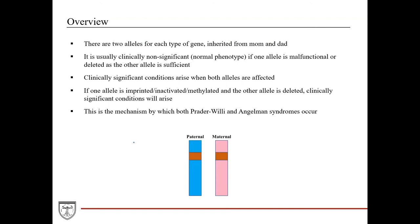Normally, for each type of gene, you have two alleles — you get one from dad and one from mom. For the diseases we'll be discussing, we're talking about chromosome 15. You have two copies of chromosome 15: one from the paternal side and the other from the maternal side. Normally, expression of one of these genes is sufficient for a normal phenotype.